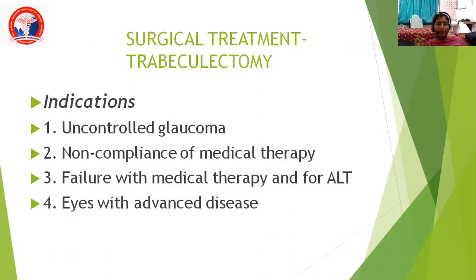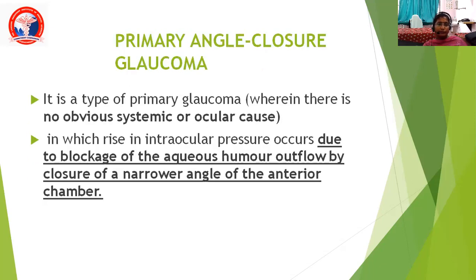Surgical treatment is mainly trabeculectomy. We go for surgical treatment only when indicated. Initially, we try medical management with all the available drugs. Only when it is not controlled do we proceed. Indications include: uncontrolled glaucoma, non-compliance with medical therapy, failure of medical therapy and unsuitability for laser trabeculoplasty, and eyes with advanced disease. With that, we finish primary open-angle glaucoma.